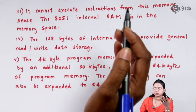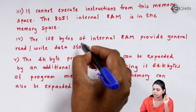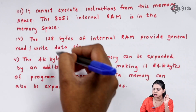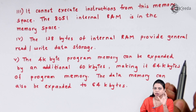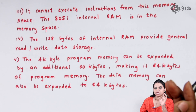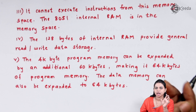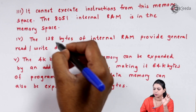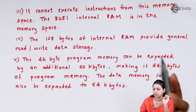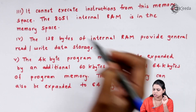ROM comes inside the program memory space, and RAM comes inside the data memory space. The 8051 has 128 bytes of internal RAM, which provides general read-write data storage.